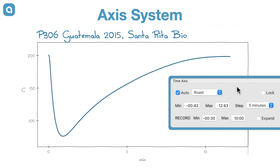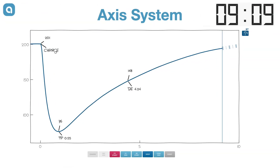There's a second set of time axis limits tagged 'record'. Those apply on starting a recording. The default is to start with a max time limit of 10 minutes. If the expand flag is ticked, the time axis is automatically extended by 3 minutes as soon as a roast is about to run beyond the current limit.